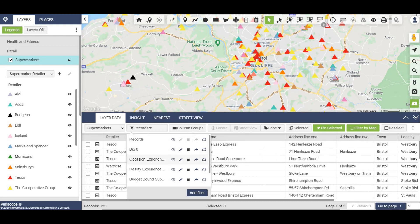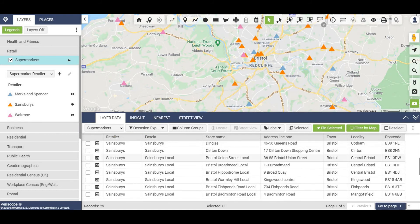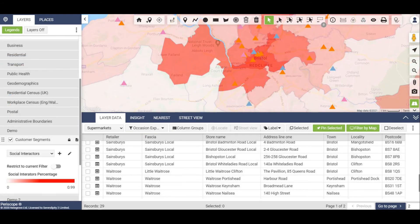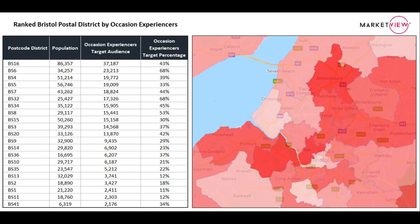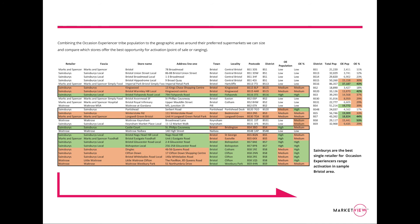We can also filter the supermarkets to correspond to the top three retailer preferences for each of the customer segments. By also turning on our customer segment layer, we have a heat map of where the highest number of corresponding populations are. We know that occasion experiences prefer to shop at Marks & Spencer, Sainsbury's and Waitrose. If we look at a Bristol area, we can not only see the density of postal district population of occasion experiences, but also how that relates to individual supermarkets. When we combine the two views, we can clearly see Sainsbury's are the best single retailer for occasion experiences range activation in this sample Bristol area.